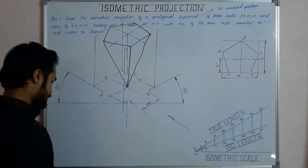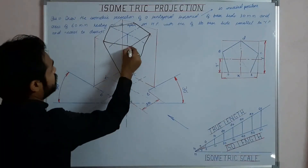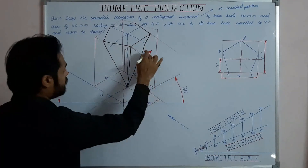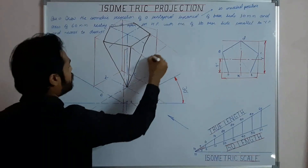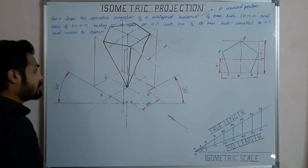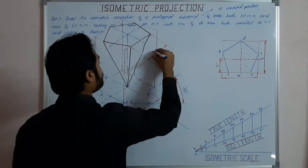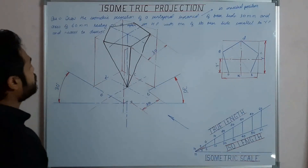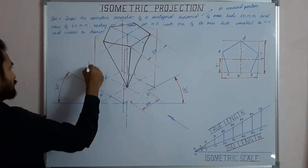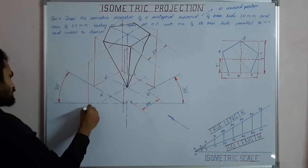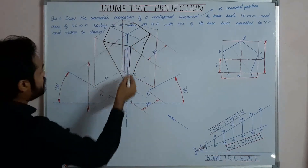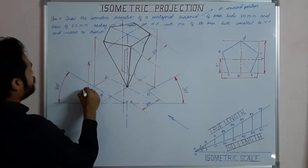This is the final answer for the third case. For dimensioning, we extend lines parallel to the first iso-axis for the base, and the dimensioning line is drawn parallel to the vertical iso-axis or parallel to the solid axis.